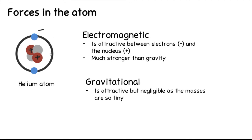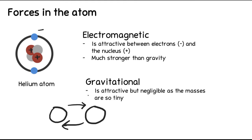Gravity is attractive because it's always attractive and there's mass here, but the masses are so tiny that gravity is considered negligible. It is the electromagnetic force that holds an atom together, not gravity. As a contrast, two large planets with very high masses and quite far apart in space — gravity will be so prominent that it causes attraction between them, while electromagnetism won't really have an effect because the planets are not really charged.